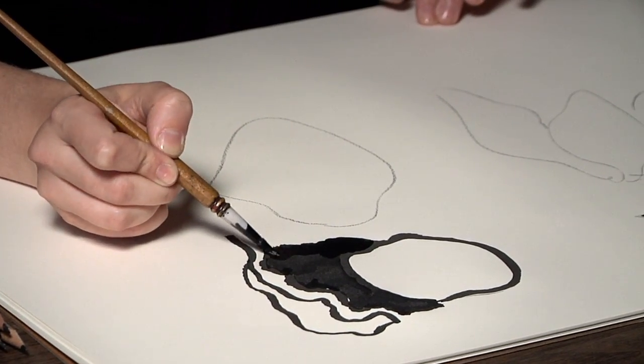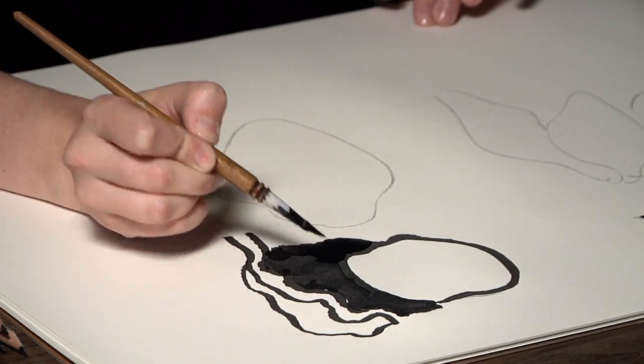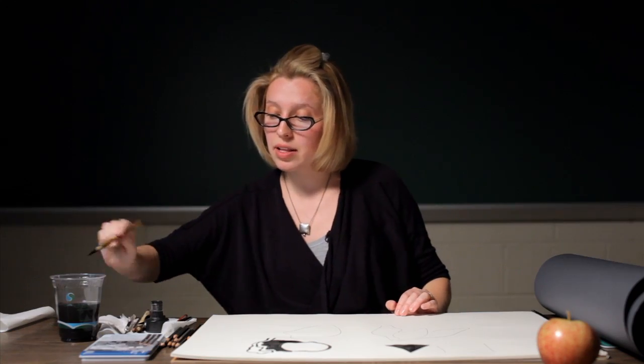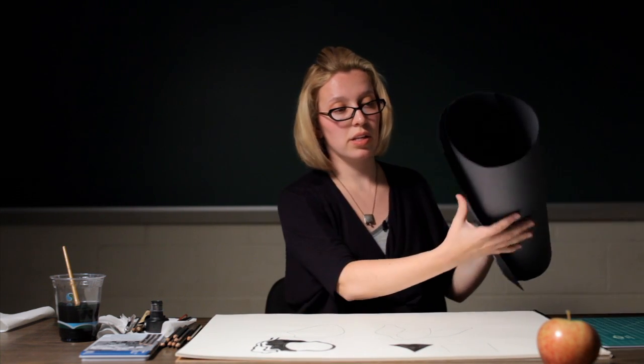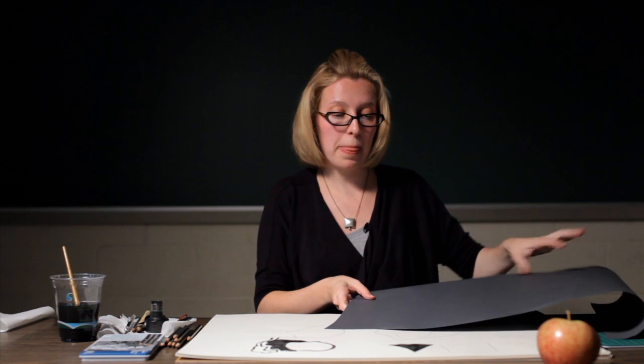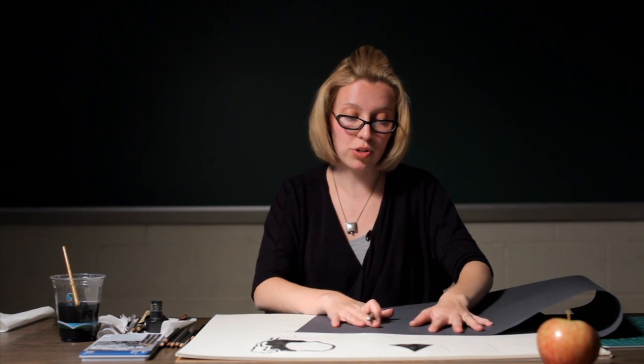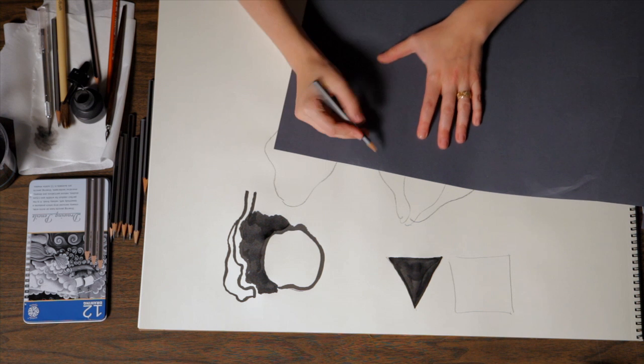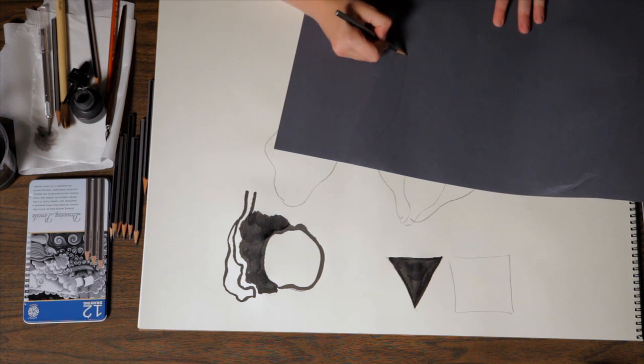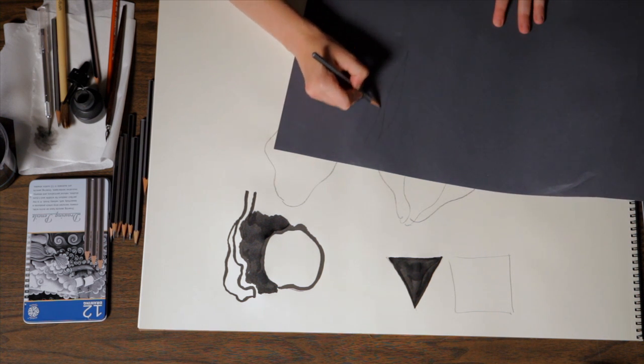And then you can fill all of your negative space in with black India ink. Another technique that you can try is experimenting with drawing shapes, negative and positive shapes, on black or gray or just dark paper, and then cutting them out.